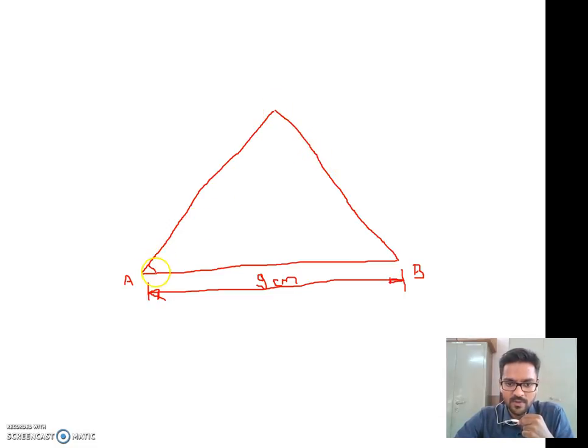So this will be 50 degrees from A and this will be 50 degrees from B. Please note that both angles should be in opposite direction. Clear?